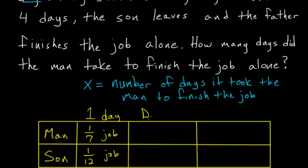In this next column, we can look at the number of days worked. And we know that each of them work four days together, though the man works an extra x amount of days.